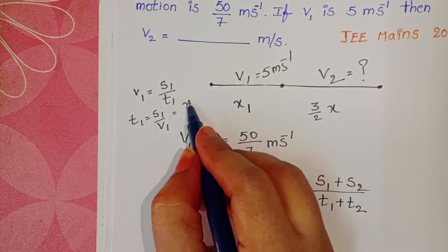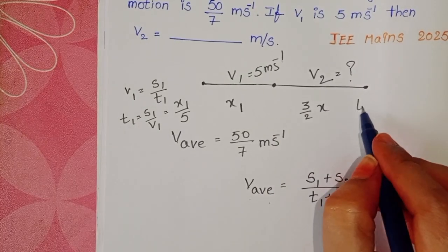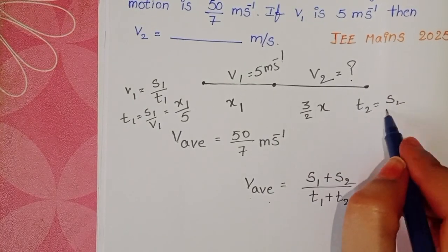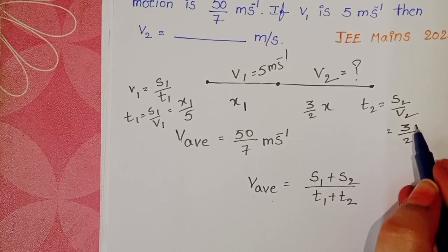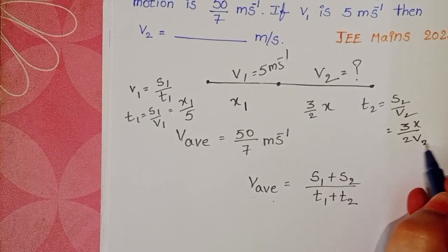Here s1 is x and v1 is 5. Also t2 equals s2 by v2. s2 is 3 by 2 x, so 3x by 2v2.